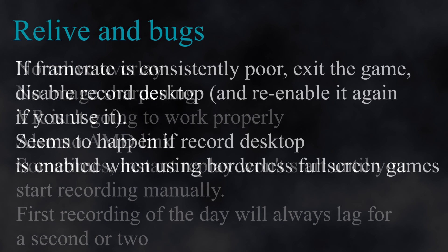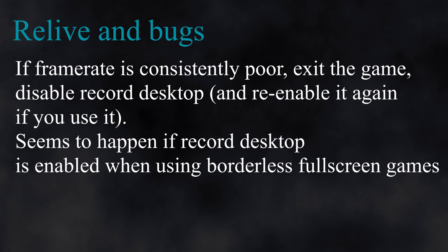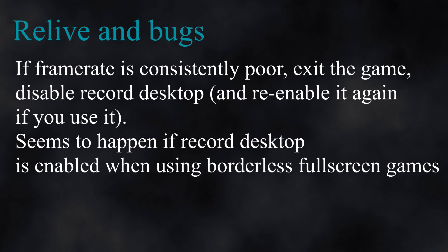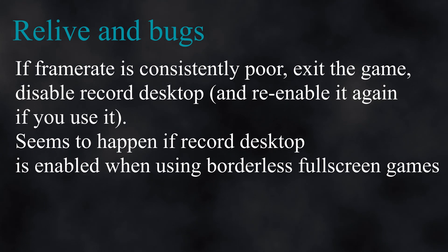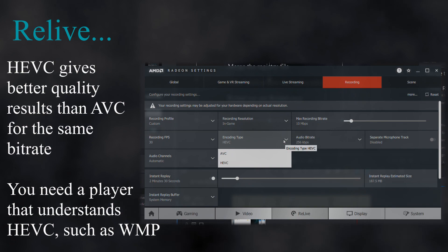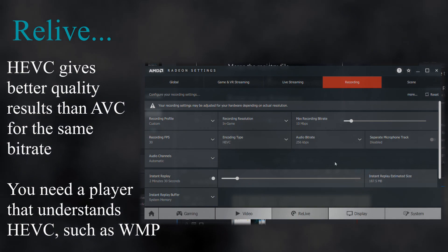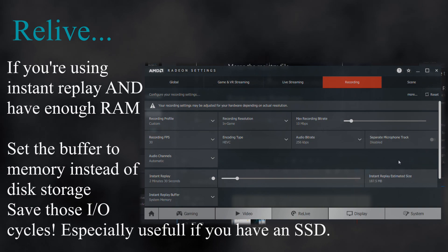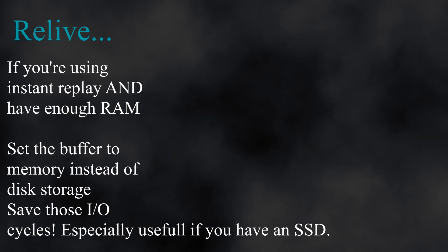Also, if for some reason your framerate is stupidly low, exit the game, disable record desktop, and then re-enable it again. This of course happens only when record desktop is enabled, and seems to happen only if you enable it while in a game. Also, I recommend using HEVC encoding, since it gives you way better quality for the same bitrate. And if you use instant replay and you have enough RAM, set it to system memory instead of your HDD. For more information on HEVC, here is a link explaining it a bit, in the top right corner.